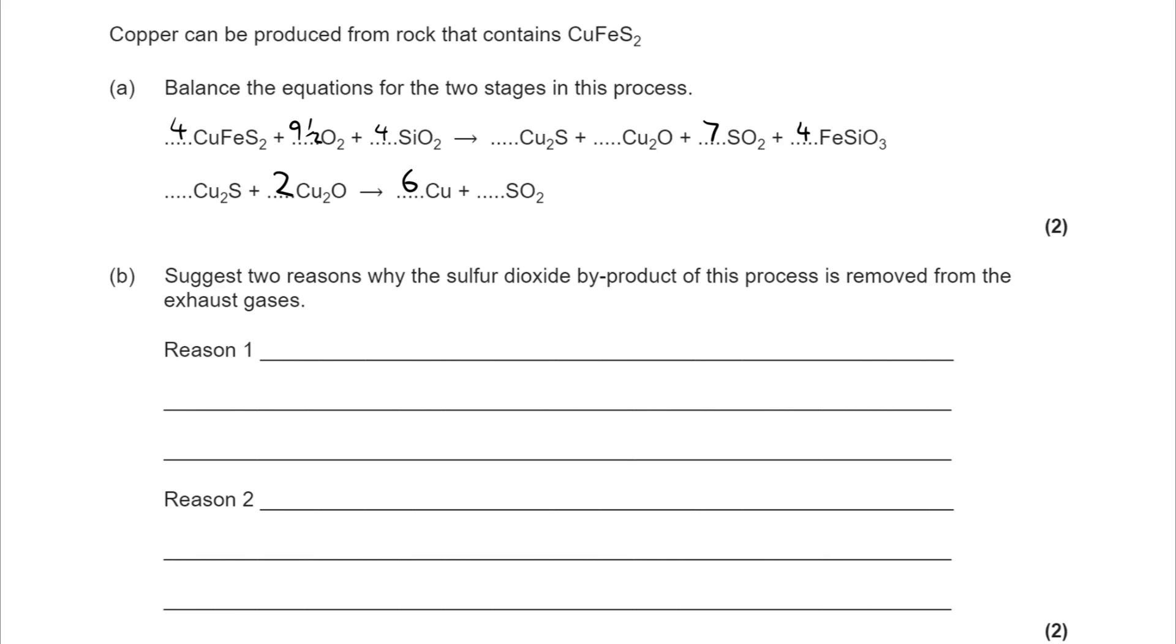Moving into organic chemistry for a little bit here, reasons why sulfur dioxide is removed from exhaust gases. It is the major cause of acid rain, so removing it will prevent the formation of acid rain. And the other answer to go for potentially is that it can cause breathing difficulties. It is a toxic gas.